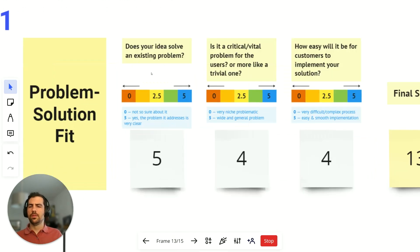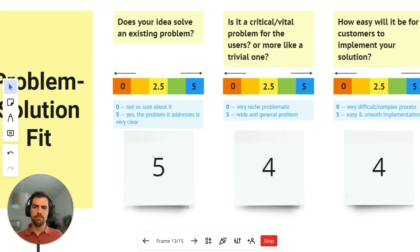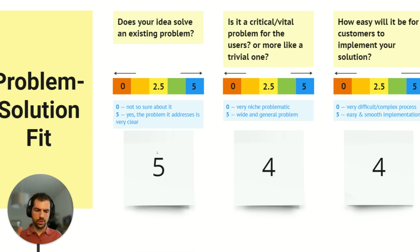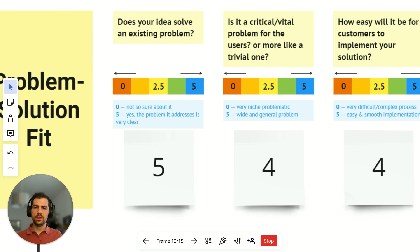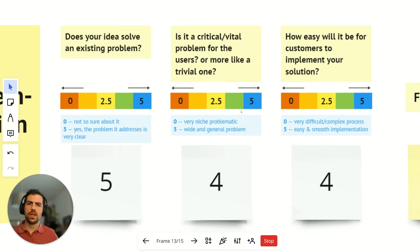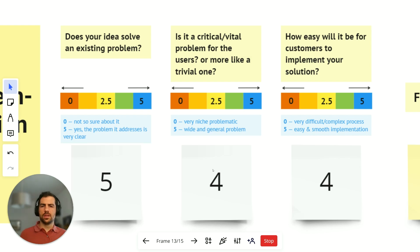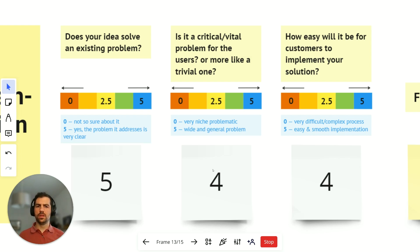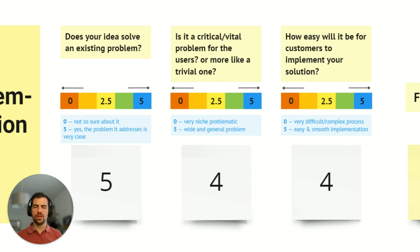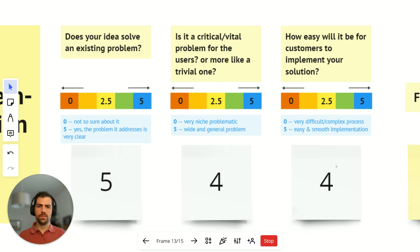In the first section, problem solution fit — 'does your idea solve an existing problem?' — we've given it a five, because it was clear they were addressing a problem for a customer segment looking for affordable, easy-to-use, beginner-friendly tools. For 'is it a critical or vital problem for users?' — zero is a very niche problem and five is wide and general — we've given it a four, because it covers a wide range of customer segments and applications.